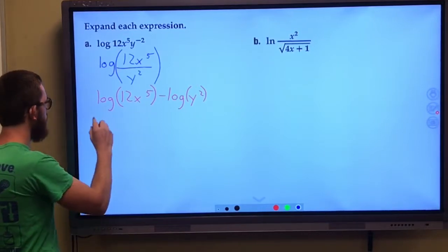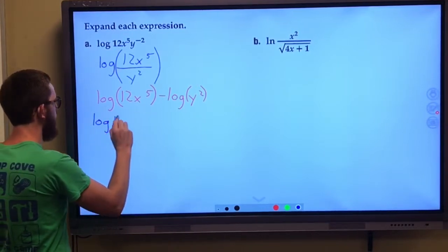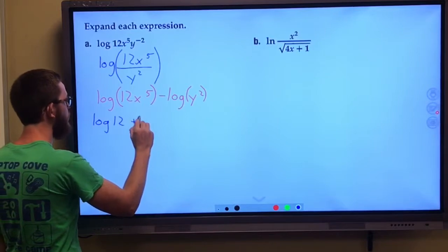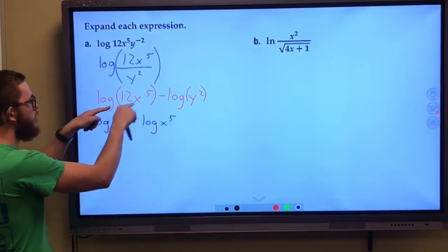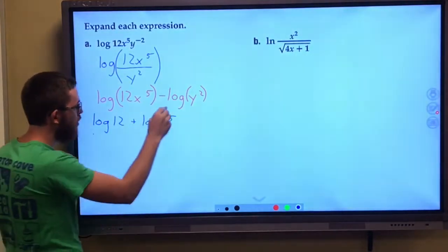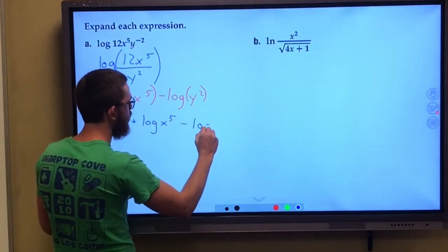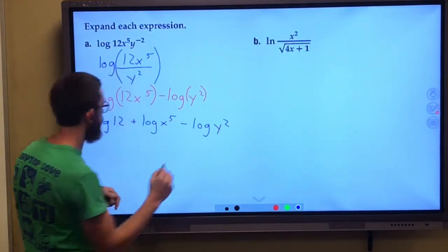Well, this could be broken down to be log of 12 plus log of x to the fifth power. This is being multiplied, so I'll use the product rule here. We're still subtracting log of y squared.